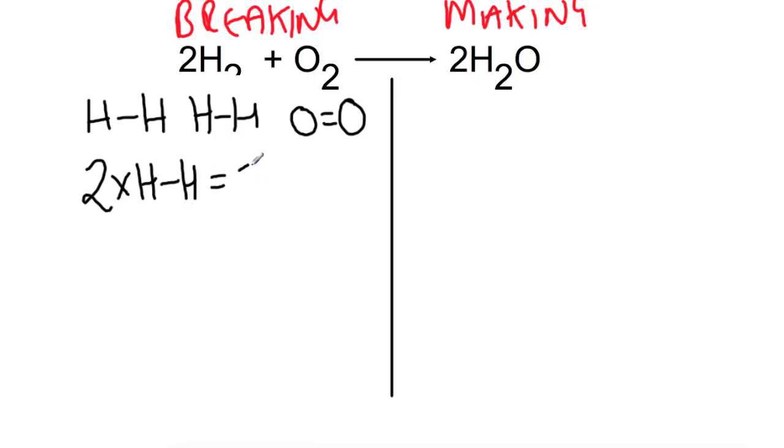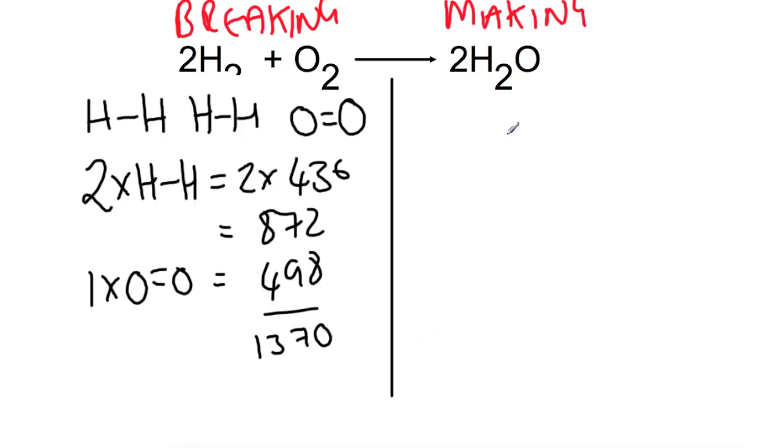And if you look in the data book you'll see that each of those bonds is worth 436 kJ. So that's 872 in total and we're breaking one oxygen double bond. So that's 498. So the total energy that needs to be put in to break all of these bonds is 1378 kJ.